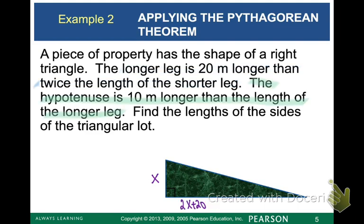The next sentence we're going to look at is the hypotenuse, so that's our side across from the right angle, is 10 meters longer than the length of the longer leg. Well, we just labeled the longer leg as 2x plus 20, so we're just going to add 10 more onto that for our hypotenuse. So we get 2x plus 30 for the hypotenuse.